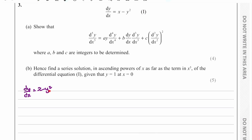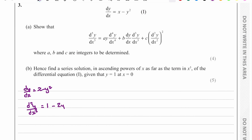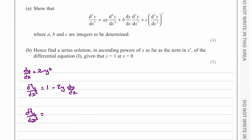We can work out the second derivative by differentiating x with respect to x, which gives 1, and then differentiating y squared with respect to x implicitly, which gives 2y dy/dx.